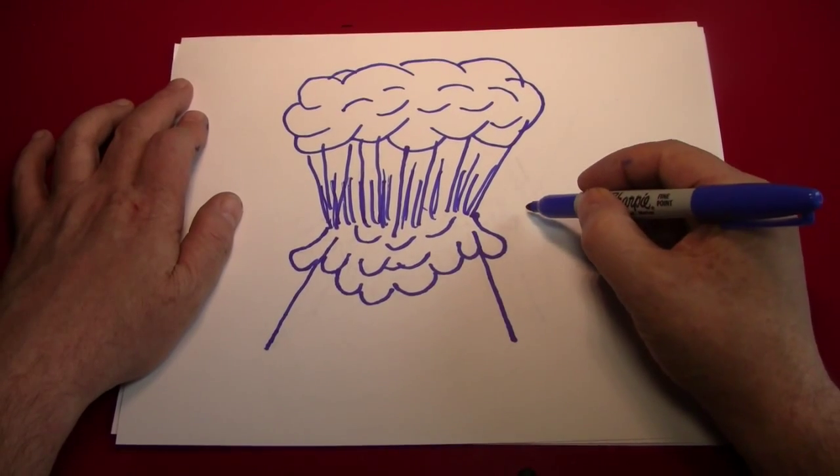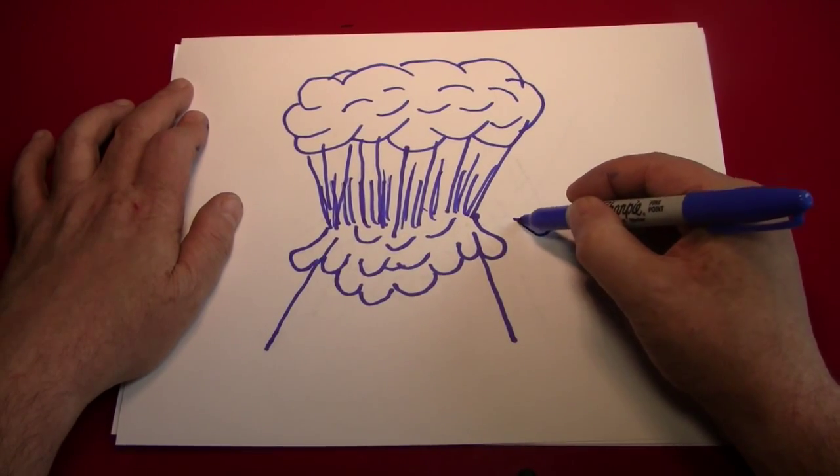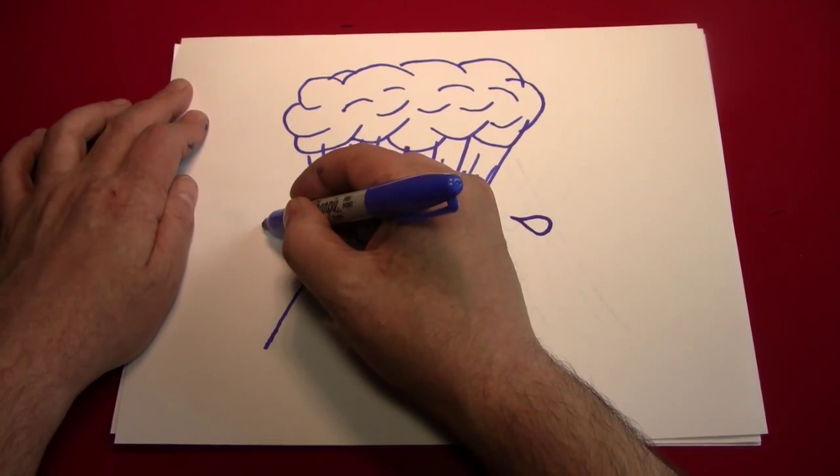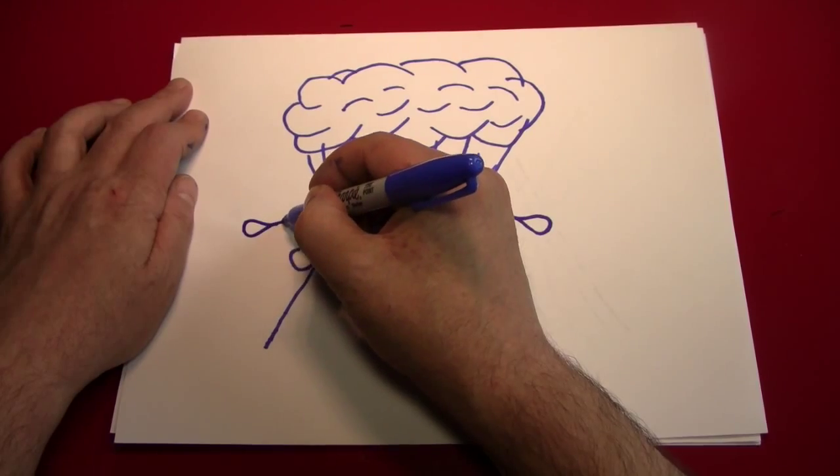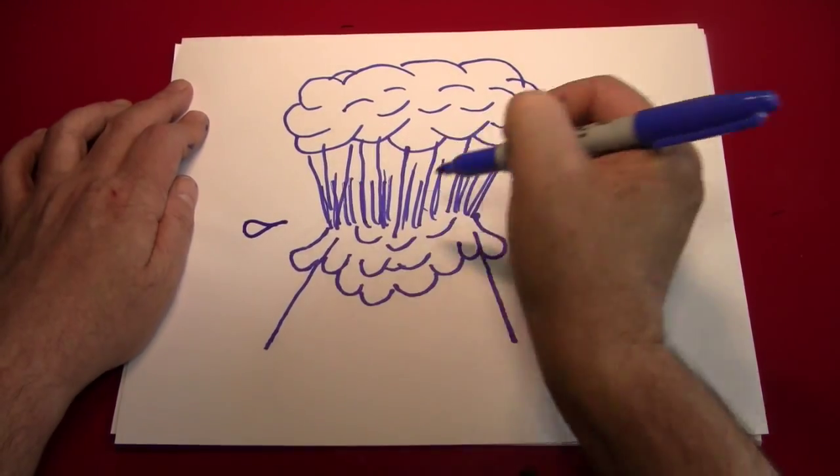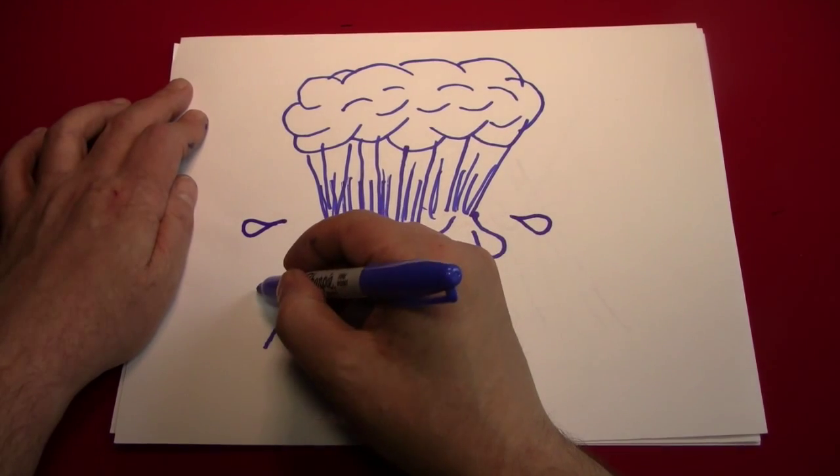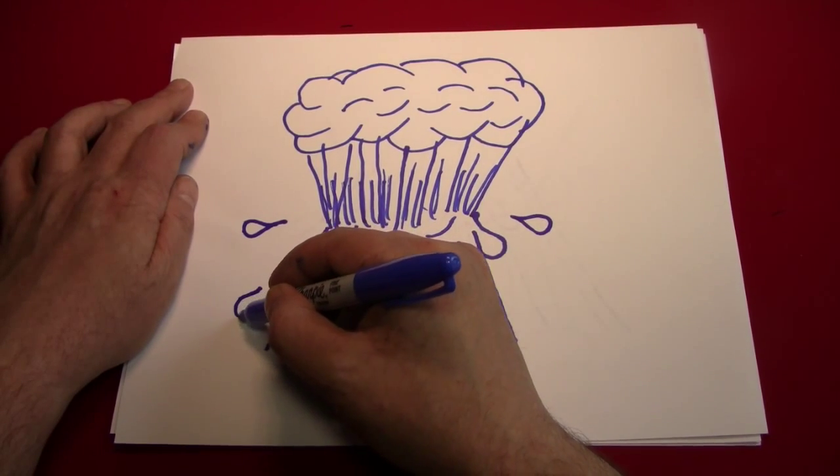Next, we're going to have some lava shooting off the edges of the volcano. And that can be represented with little teardrop shapes. And just remember, the point to the teardrop should probably point towards its source. And that would be the volcano.